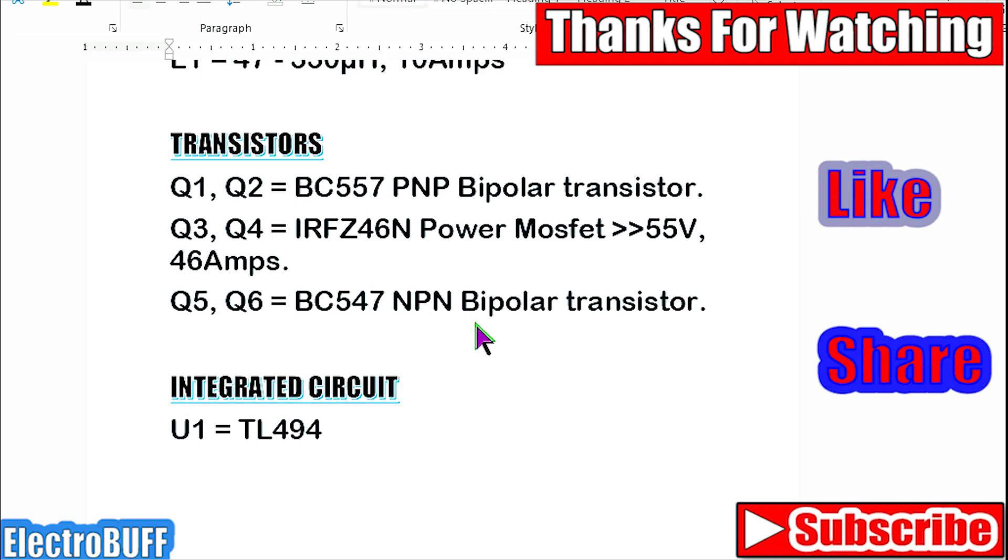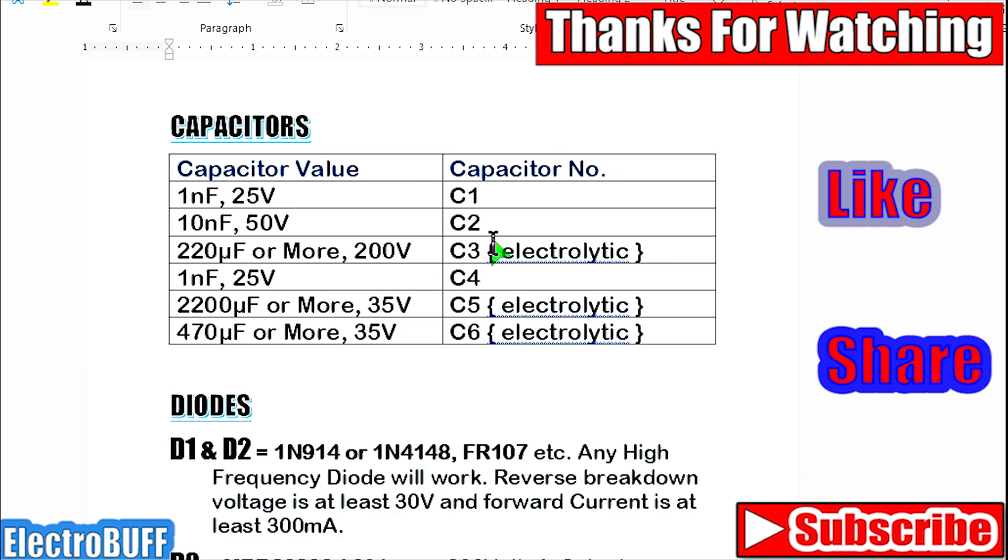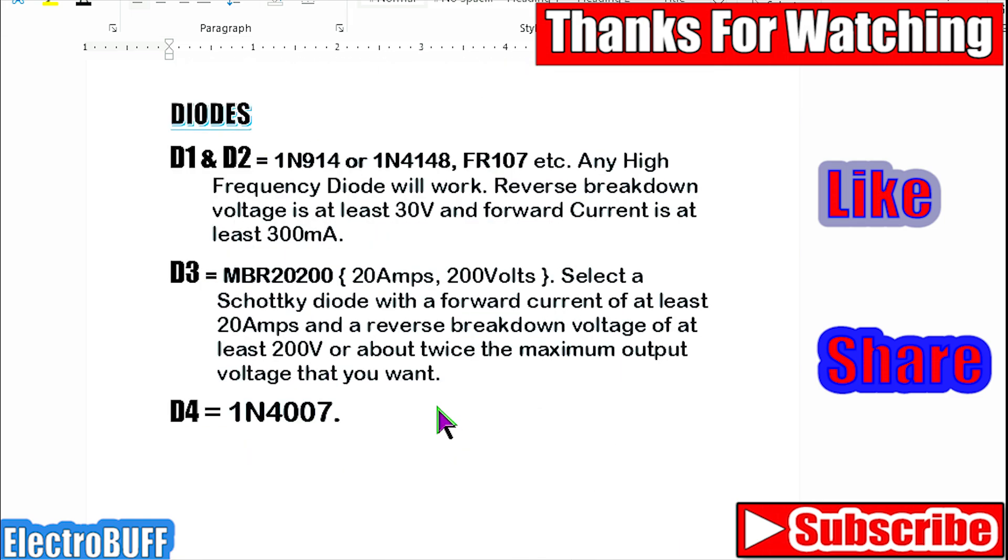the transistors you need, the IC is TL494, the resistor values and the resistor power ratings, the capacitors. C3, C5 and C6 are electrolytic, the rest are ceramic or film capacitors, and the diodes with their voltage and current ratings are shown, and the diodes.